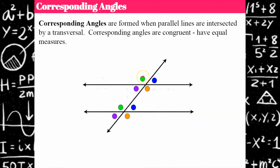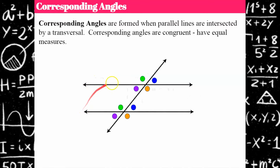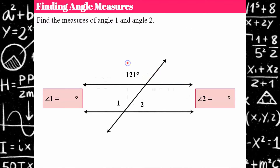So we have: above and to the left, above and to the right, below and to the right, and below and to the left. Corresponding angles are in the same location relative to each parallel line and on the same side of the transversal. We can use this to help us find angle measures.